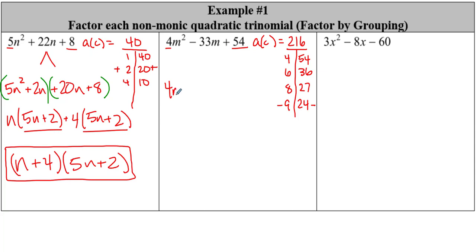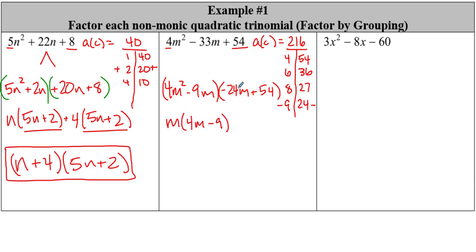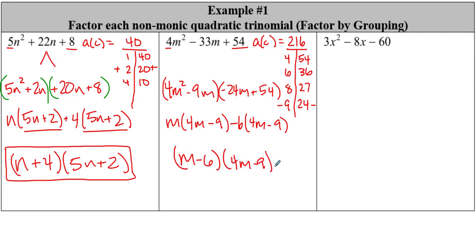Let's rewrite this: 4m² minus 9m, group them, minus 24m plus 54, group them. Looks like we can only take out an m, so I'm left with 4m minus 9. Here, remember — if you've got a negative, always take out the negative — so I take out negative 6. That leaves me with 4m minus 9. These match. So I got (m − 6)(4m − 9).